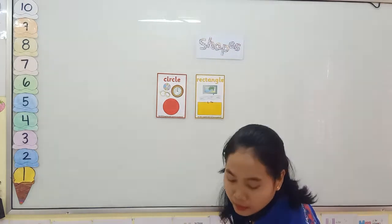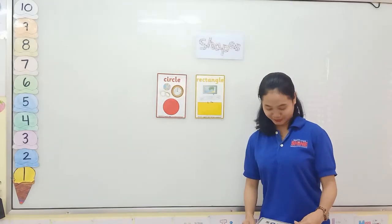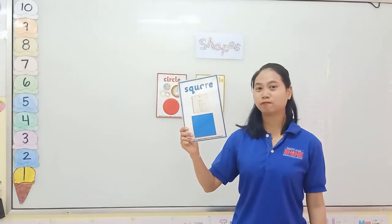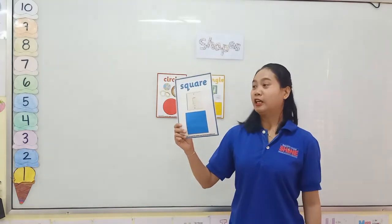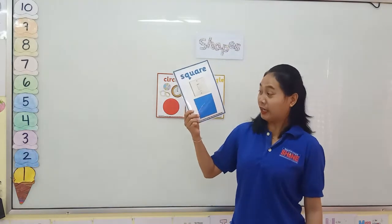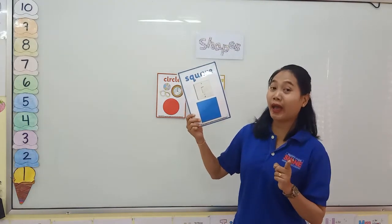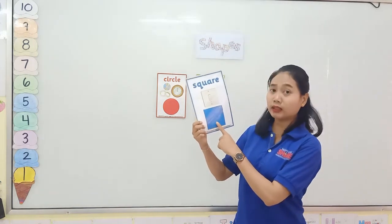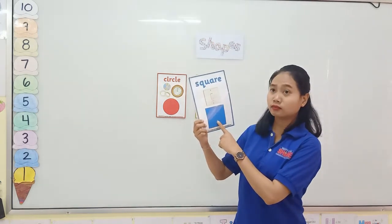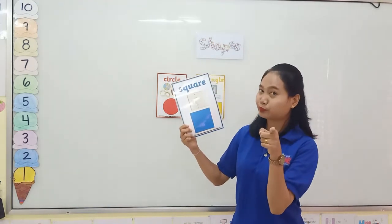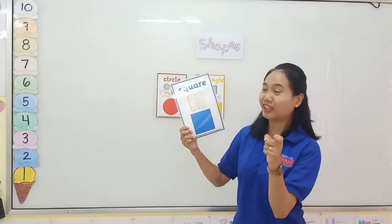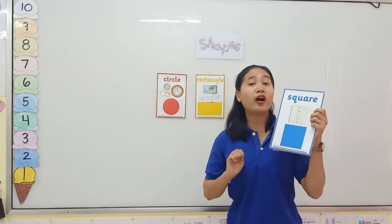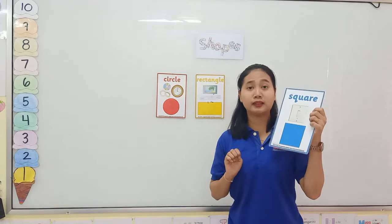And last one. What shape is it? It is a square. What color is it? Well done. It is blue. Square has four sides that are the same.